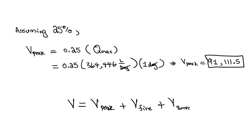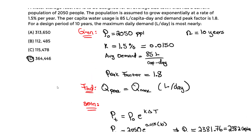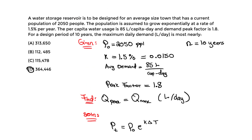For fire volume, we look at the fire flow rate — for example, 38,000 liters per minute — and the duration it must be maintained, say 10 hours. We take the flow rate times the time period to determine the volume needed for fire. So the total volume depends on the peak volume, the fire volume, and the emergency volume. But in this specific question, we just found the maximum daily demand, and our answer is D.